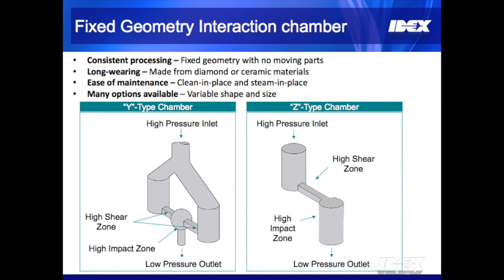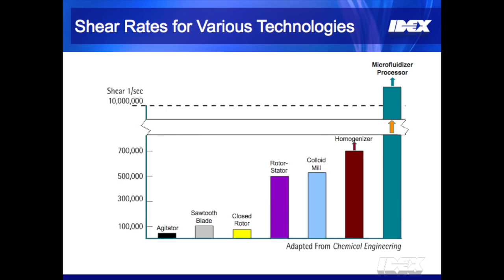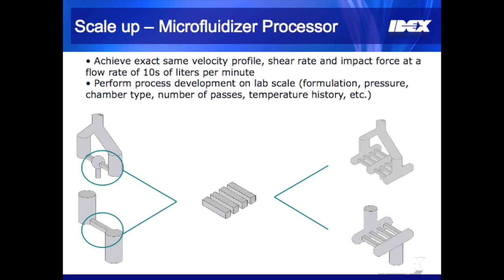The interaction chamber is the heart of the Microfluidizer processor — a fixed geometry microchannel ensuring all material is processed at a very constant shear rate. These are two types of interaction chambers: the Y-type on the left, ideal for emulsions and liquid-only formulations, and the Z-type on the right, ideal for formulations containing solids. Both are made of very wear-resistant material like polycrystalline diamond, can be cleaned and steamed in place, and come in a variety of sizes. When we scale, we add additional microchannels placed in parallel to ensure every microliter gets the same processing conditions.